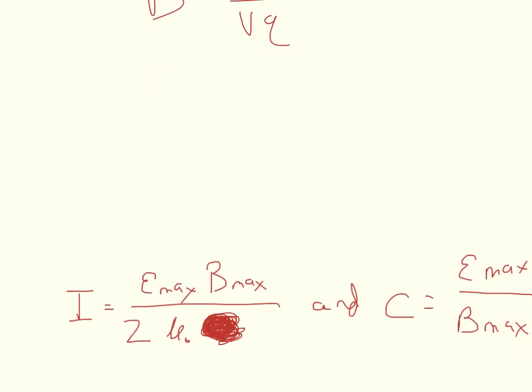So the intensity is equal to the maximum electric field times the maximum magnetic field divided by 2 times the permeability of free space. Now, don't worry about this stuff right here. I just scribbled some stuff out that shouldn't have been there because this wouldn't let me erase for whatever reason.